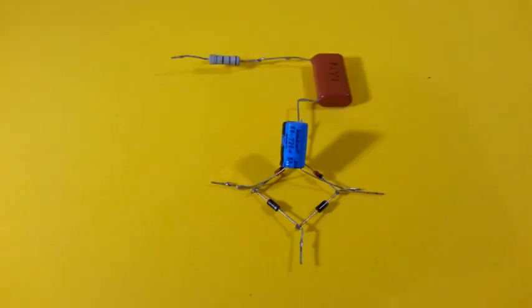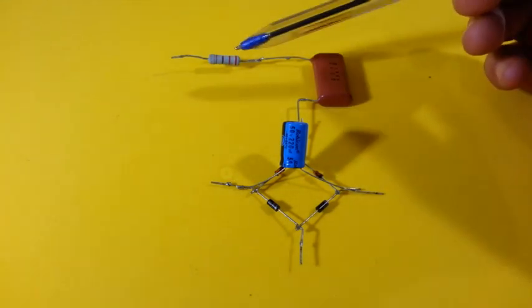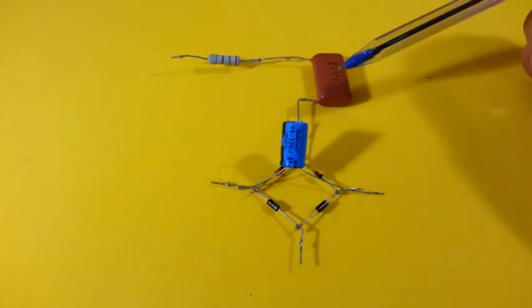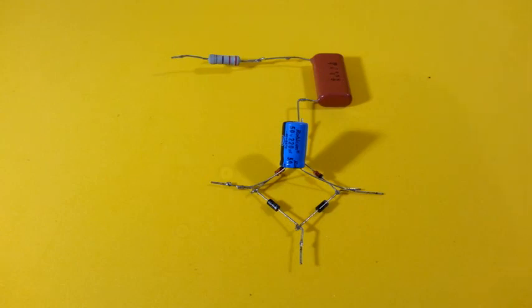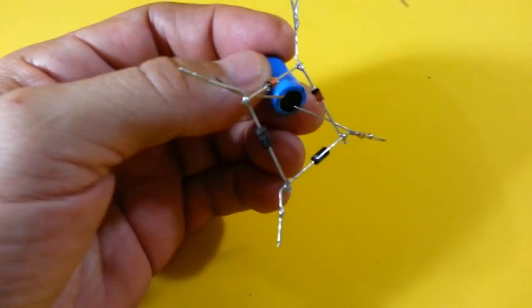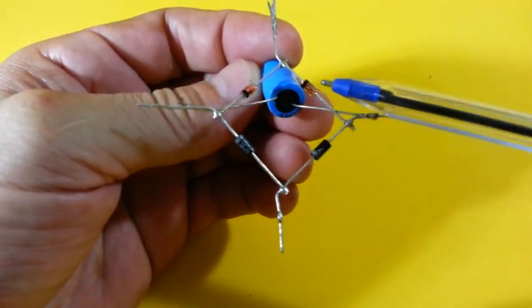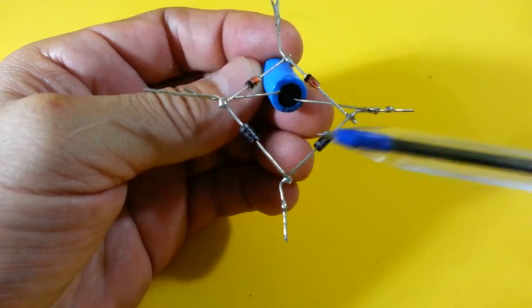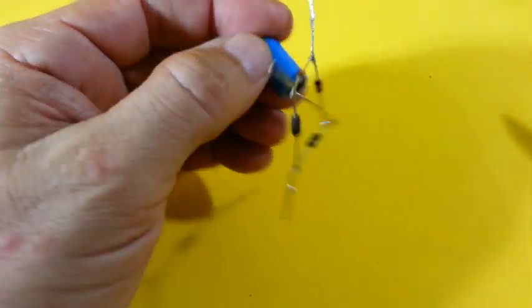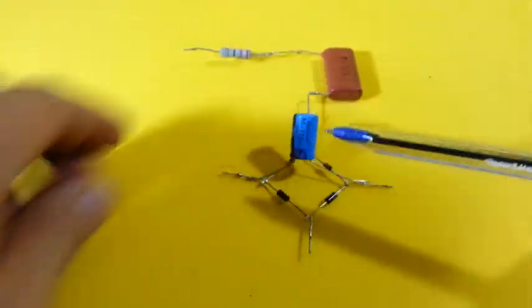This is our circuit. Here you can see the resistor and capacitor and together they form the impedance that limits the current. The bridge rectifier has the two zener diodes and two normal rectifier diodes, and the output capacitor.